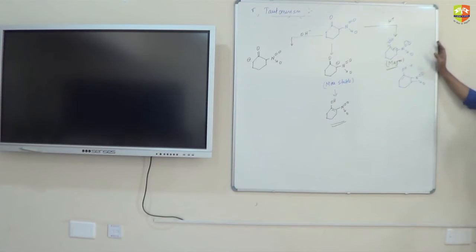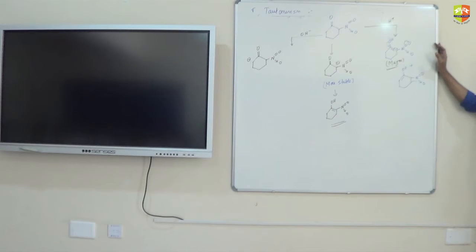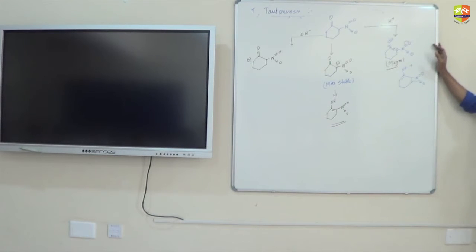This is it for tautomerism. There are a few more things we have to cover. Like I told you that if you get phenol with O-H, it is aromatic - this form is 100% of the combination.